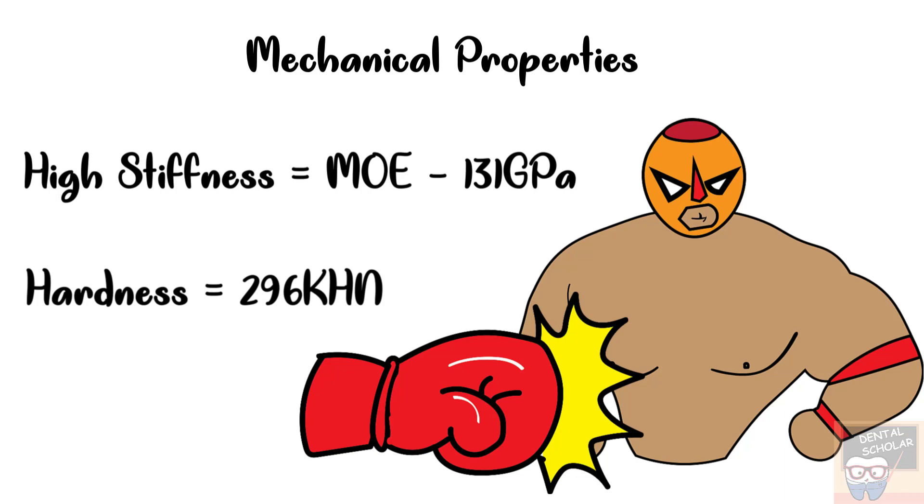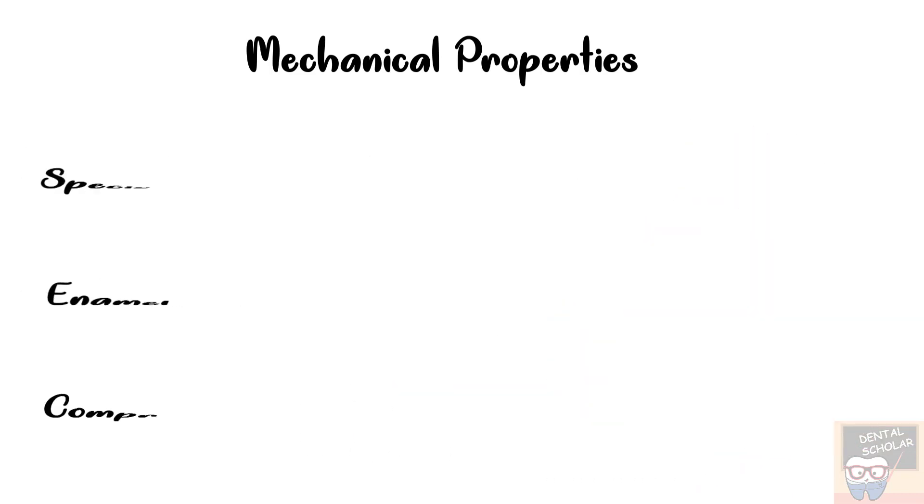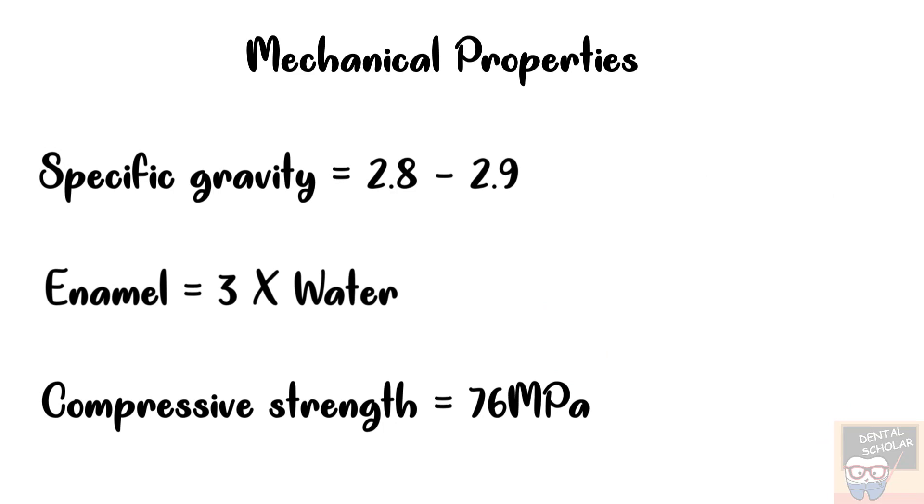Enamel is also the hardest human tissue. It has a hardness of about 296 KHN. Enamel has a specific gravity that is a density of about 2.8 to 2.9. So we can say that density of enamel is about 3 times that of water. Its compressive strength is high about 76 MPa.